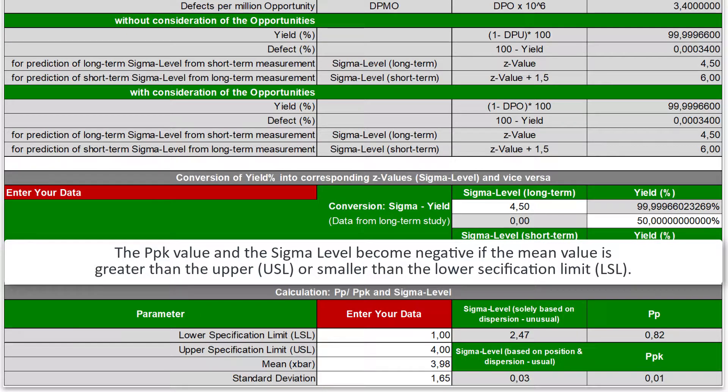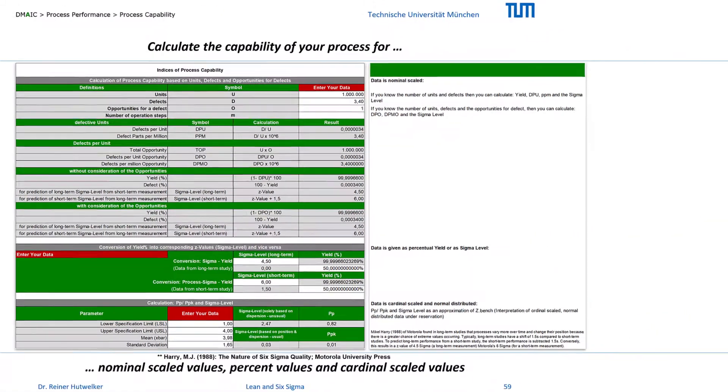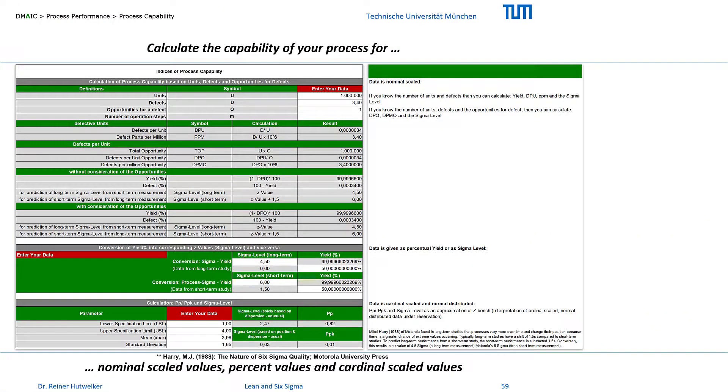Both values would even become negative if the mean value were greater than the upper or below the lower specification limit. And many projects I have worked on in the past have started with a negative sigma level. But it doesn't matter where you are today, but what you will have achieved tomorrow.